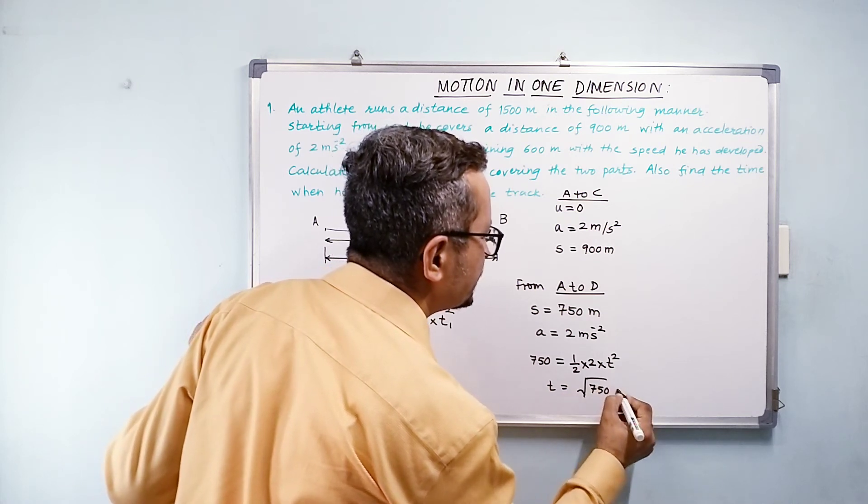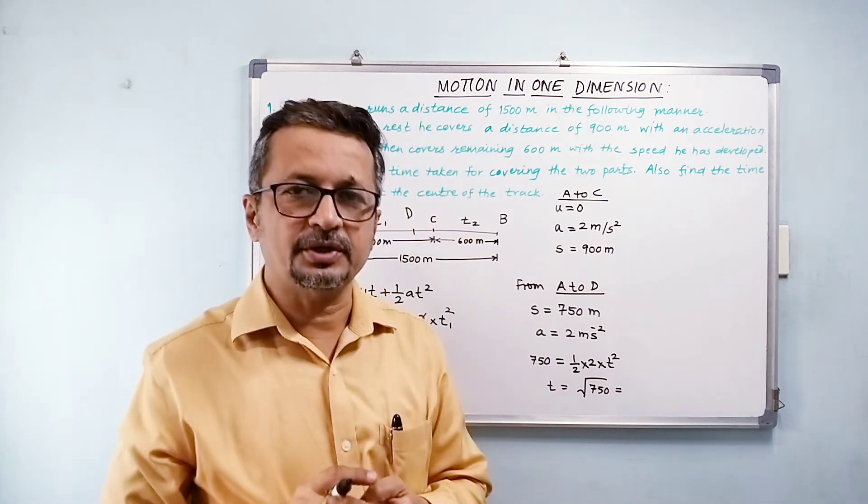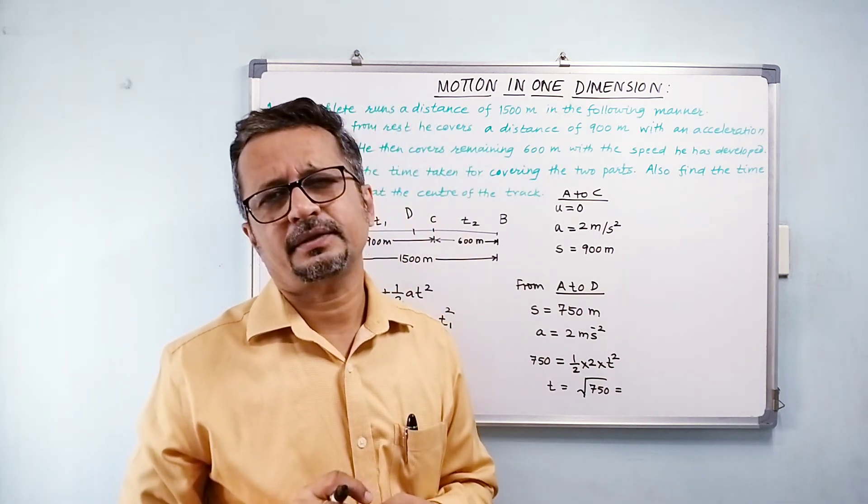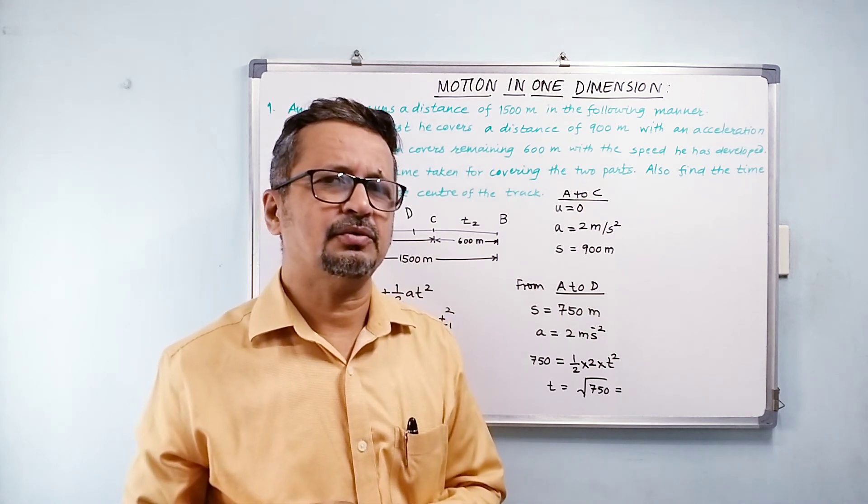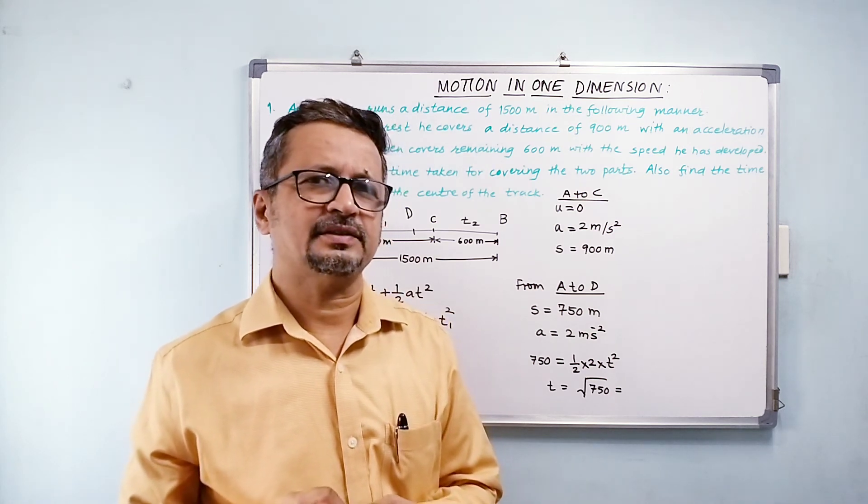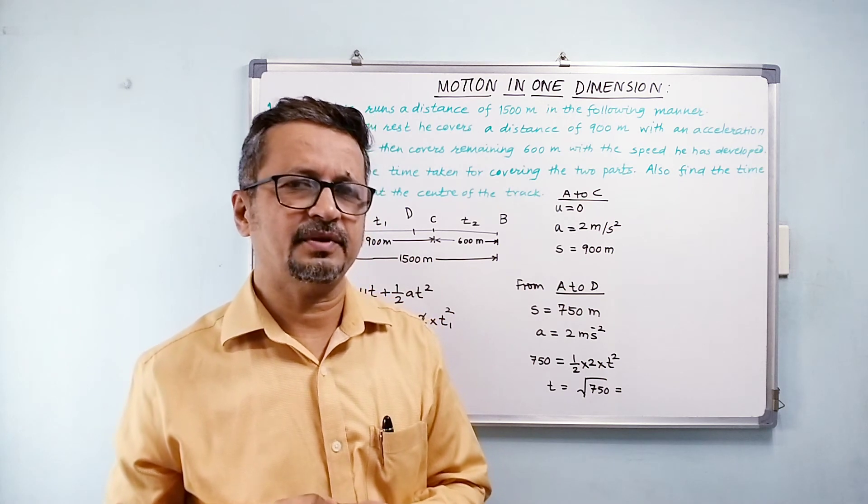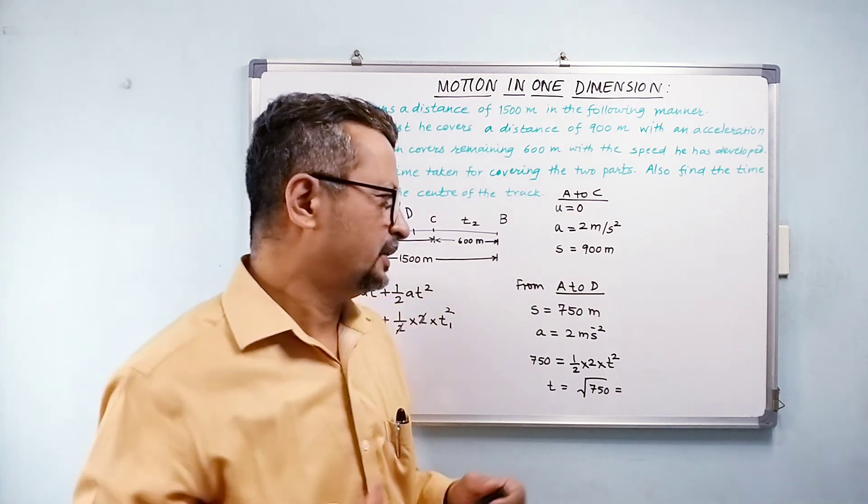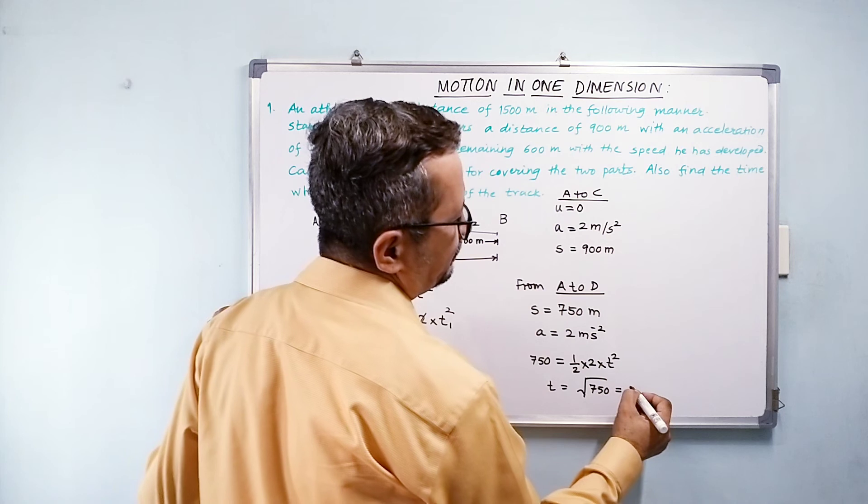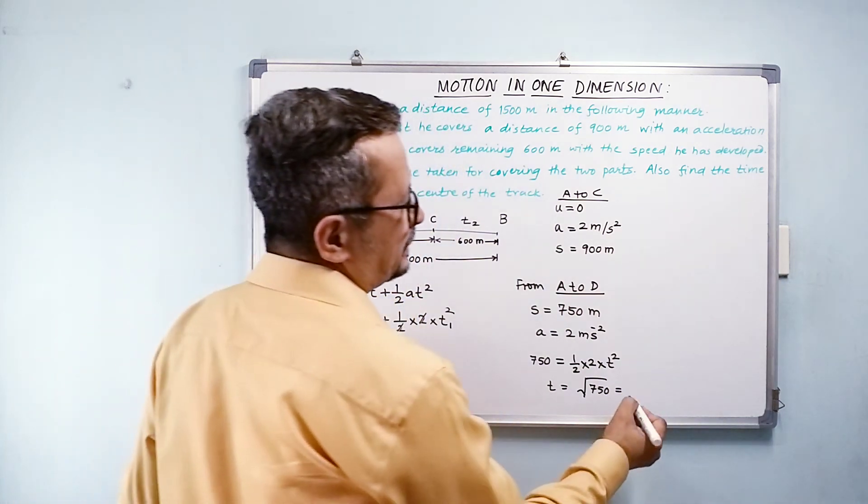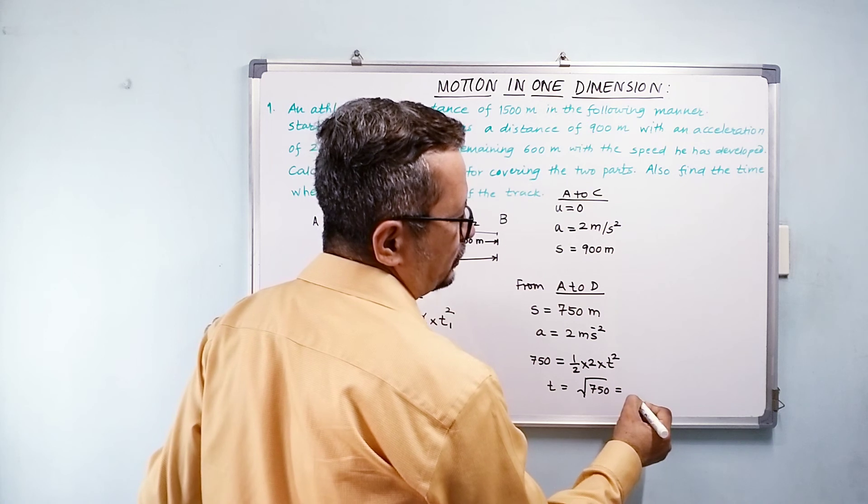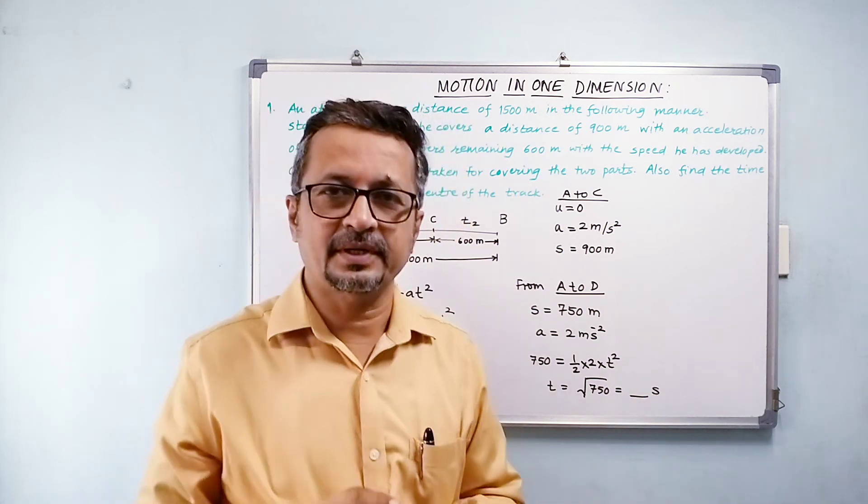So t will be equal to square root of 750. That will be equal to 25 into 30. And 30 is, how do you factorize 30 for getting a perfect square? There is no way. So I would say it will be 5 root 30. You can calculate that time on your calculators and just get the answer.